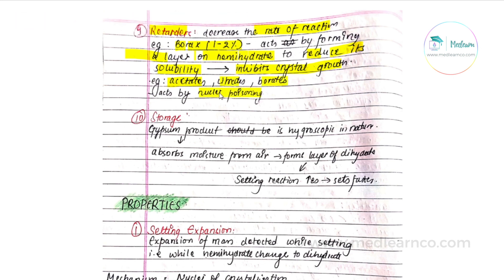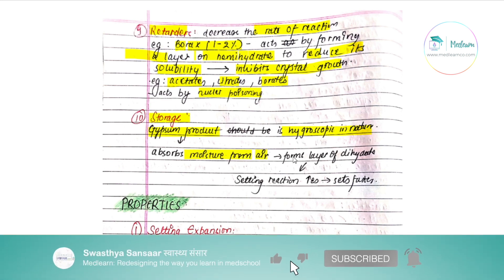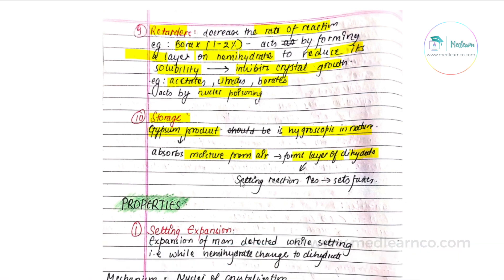Tenth factor is storage. The gypsum product is hygroscopic in nature — it can absorb moisture from the air, forming a layer of dihydrate on the surface, which increases the setting reactions. These were the 10 factors affecting setting time. Now let's move on to properties.